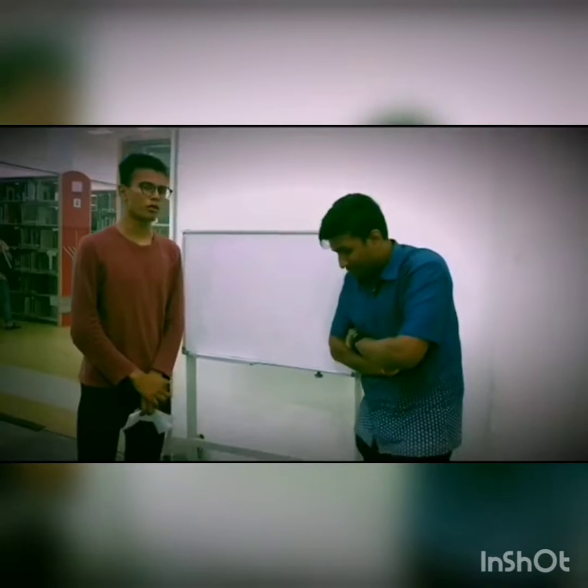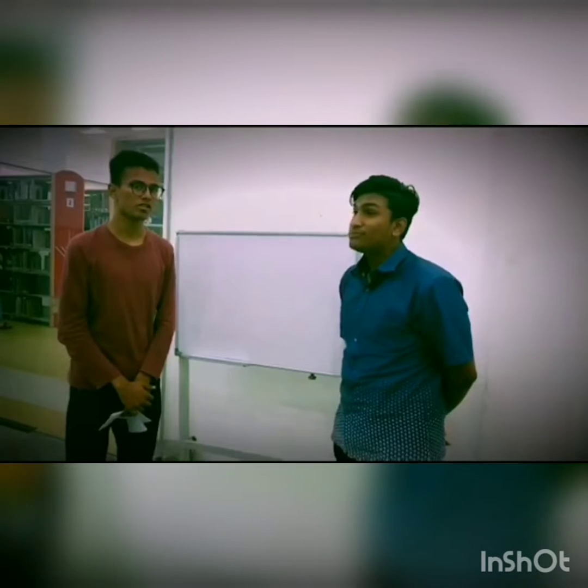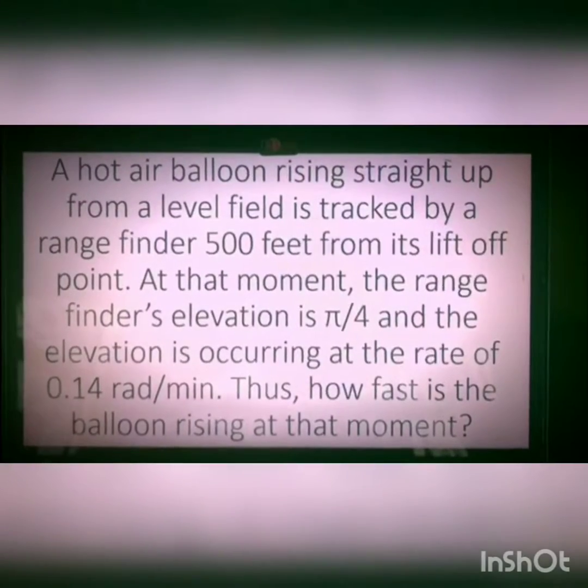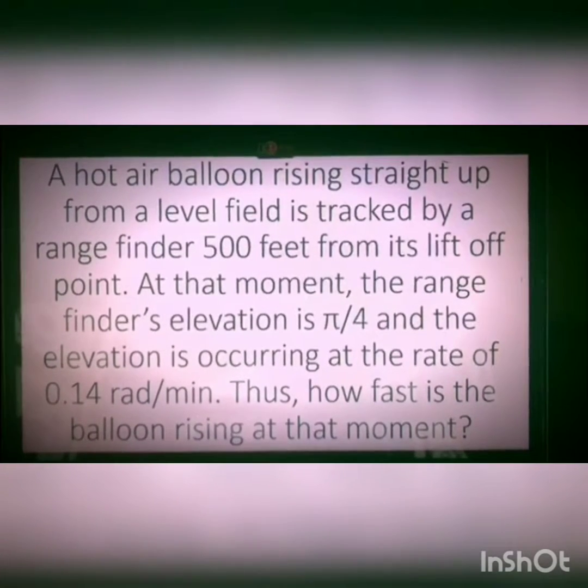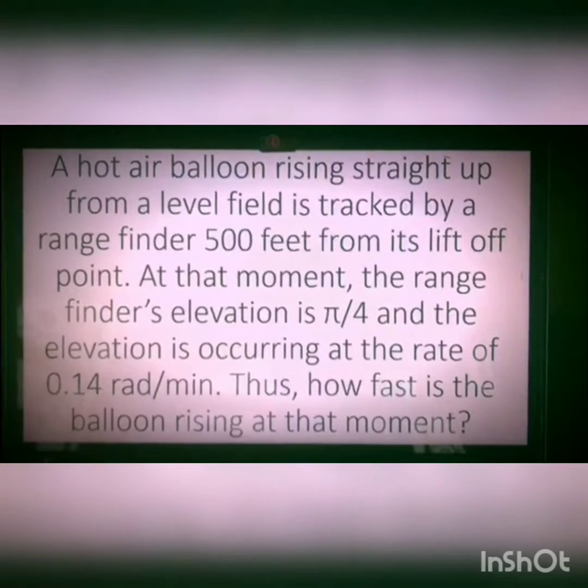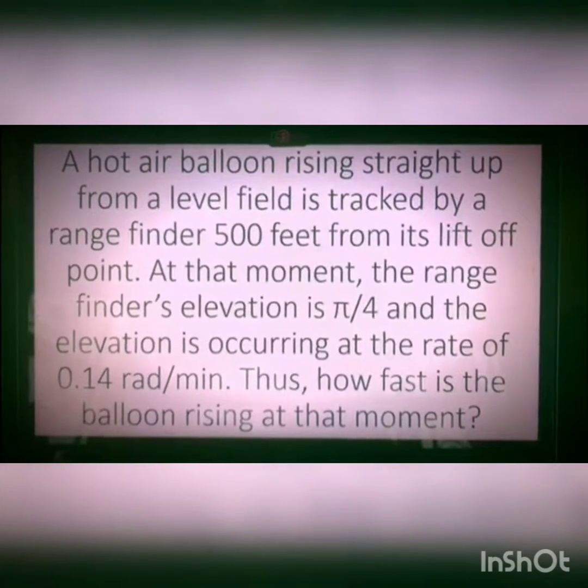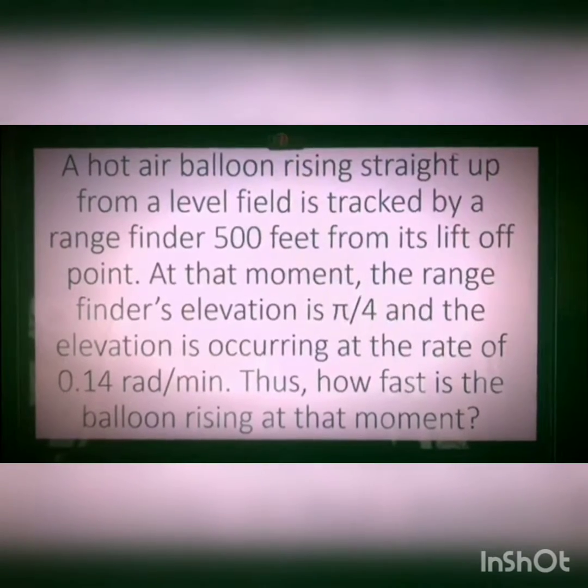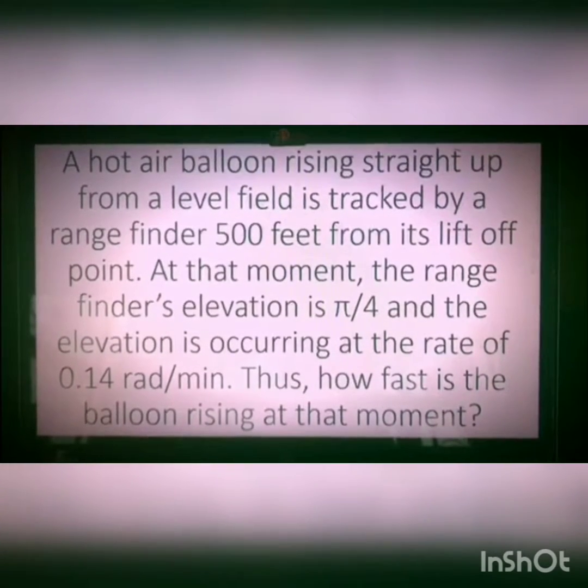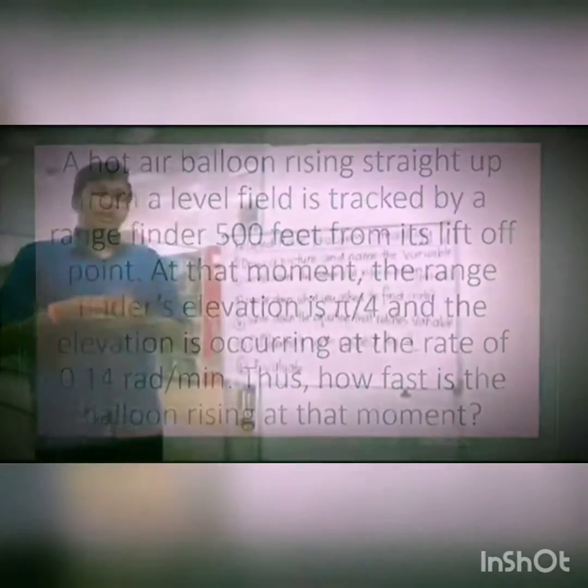Today, we are going to solve a differentiation problem involving real-life application. Our application is arising in this world. This is our question: A hot air balloon rising straight up from a level field is tracked by a range finder 500 feet from its lift-off point. At that moment, the range finder's elevation is pi over 4 and the elevation is occurring at the rate of 0.14 radian per minute. How fast is the balloon rising at that moment?